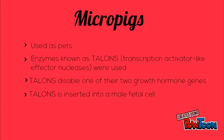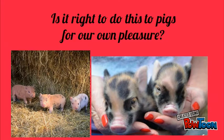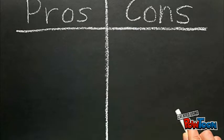TALENs gets inserted into a male fetal cell and after that male is born, he is bred with a normal female so that half of their offspring could be micropigs. This is another concern for ethics because of how that lack of one growth hormone could affect them. It could stunt the growth of vital organs in their bodies.